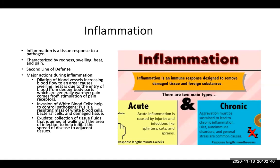Inflammation is a tissue response to a pathogen — an immune response designed to remove damaged tissue and foreign substances. We can have acute or chronic inflammation: acute is caused by minor injuries, and chronic is usually a sustained inflammation due to diet or an autoimmune disorder. It is characterized by redness, swelling, heat, and pain, and is one of the body's second line of defense. Major actions during inflammation include dilation of blood vessels, increasing blood flow, swelling, and invasion of white blood cells. Pus is a resulting mass of white blood cells, bacterial cells, and damaged tissue. Exudate is a collection of tissue fluids aimed at walling off the area of infection.